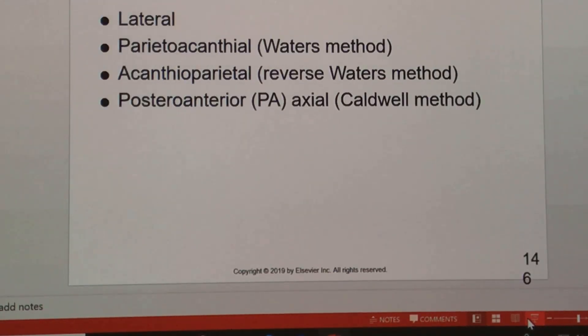All right, so procedures. What we're going to do is lateral, this is just facial bones, not orbits. Lateral facial bones, a Waters method, and that's really the Waters is the only thing that we're going to add to this particular lecture. Everything else we've covered in cranial bones. So we've got the lateral, the parietoacanthial projection which is a Waters method, the acanthoparietal projection which is really the reverse Waters, and then we've got PA which is the Caldwell that we saw before, PA axial.